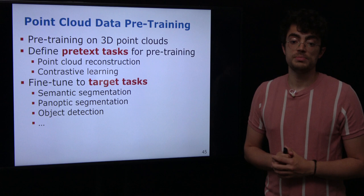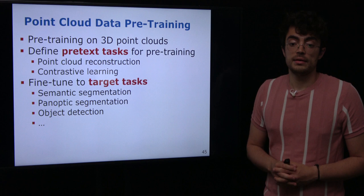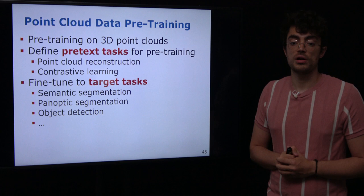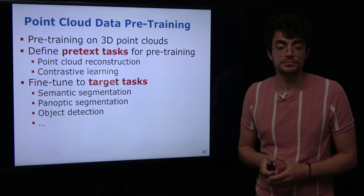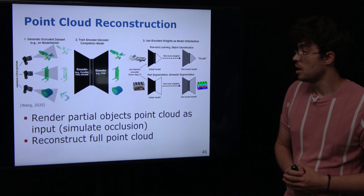To tackle the overall overfitting problem, another possibility is through pre-training. As mentioned for the image domain, we can define pretext tasks, and for point cloud we can do the same. For example, we could define a point cloud reconstruction pretext task, or use contrastive learning to pre-train the model and later fine-tune to the target task, which could be semantic segmentation, panoptic segmentation, or object detection.